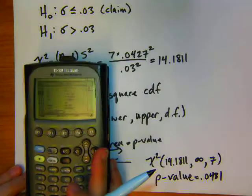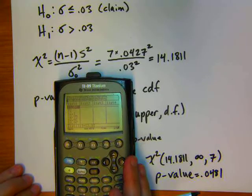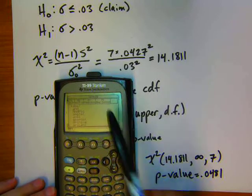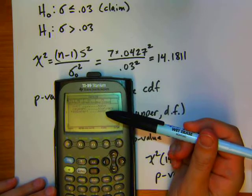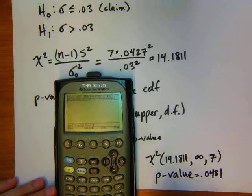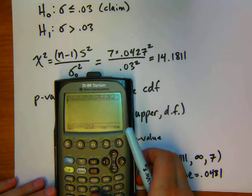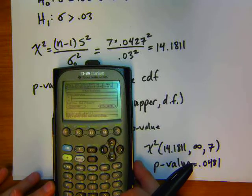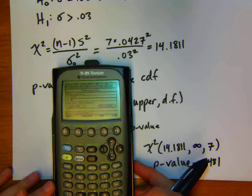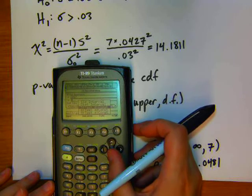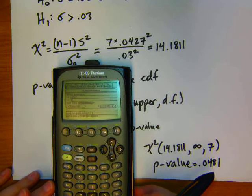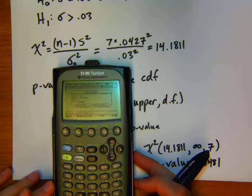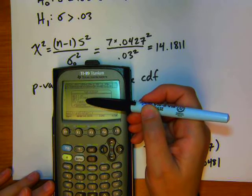On the TI-89, go back to the home screen, then go into catalog under F4, and find the standard deviation inference program. Close the parentheses and hit enter. Enter the standard deviation .0427, then n equals 8. From the drop-down menu choose option five for right-tailed, then enter the hypothesized standard deviation value of .03. Hit enter and the output shows the test statistic, degrees of freedom, and p-value.